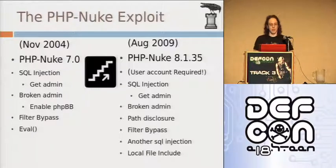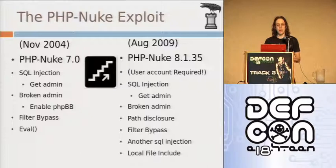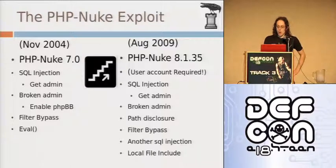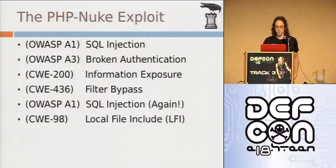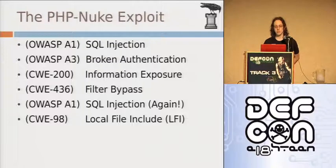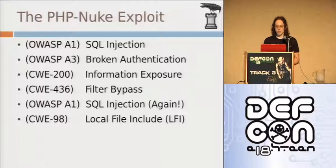The exploit code is on your DEF CON CD. In the PHP Nuke 7.0 version of the branch there were fewer vulnerabilities required in order to gain remote code execution. As time goes by, the application itself has gotten more secure. But what we're going to focus on is the chain affecting 8.135 - we use SQL injection to obtain administrative credentials out of the database. We use those administrative credentials to leverage broken authentication and session management, OWASP A3, and ultimately to get information disclosure about the system which is required for later exploits.